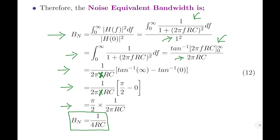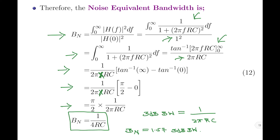Recalling the 3 dB bandwidth of the RC low pass filter, which is equal to 1/(2πRC), and comparing with the noise equivalent bandwidth Bn = 1/(4RC), we find that the noise equivalent bandwidth is 1.57 times greater than the 3 dB bandwidth. We also note that the noise equivalent bandwidth decreases as the value of resistance increases, which is obvious because resistance resides in the denominator of the expression for bandwidth.